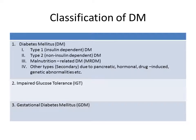The WHO has classified diabetes into frank diabetes mellitus, impaired glucose tolerance, and gestational diabetes mellitus — when diabetes is detected for the first time during pregnancy. Frank diabetes mellitus is of four types: type 1, type 2, malnutrition-related diabetes mellitus, and other types including secondary diabetes mellitus due to destruction of pancreatic cells.